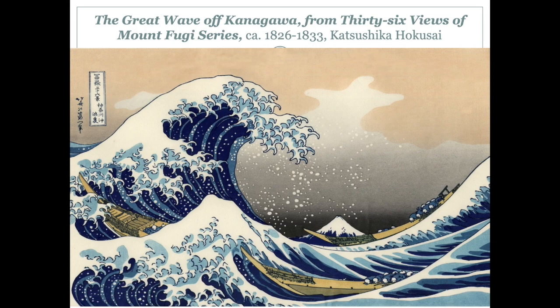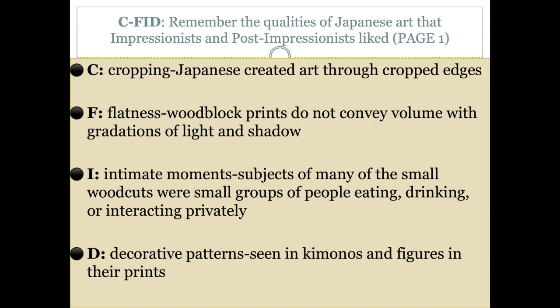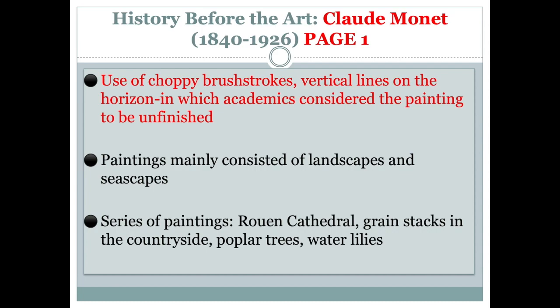The Great Wave captures one moment — the strength of nature about to crash over rowers, with Mount Fuji in the background — and highly influenced impressionist artists. If you visit Monet's house today in Giverny, France, just outside Paris, his house is covered with these woodblock prints that inspired him. The number one artist you have to know is Claude Monet — the father of impressionism. The name 'impressionism' actually comes from one of his paintings called Impression, Sunrise. He uses choppy brushstrokes and vertical lines on the horizon; many academics considered his paintings unfinished because the brushstrokes didn't look fully blended.